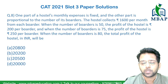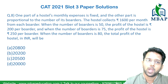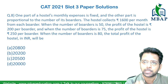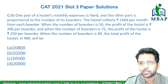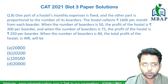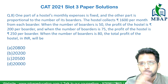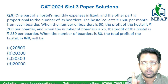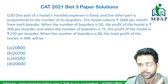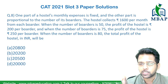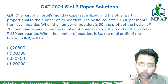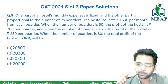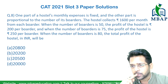Let's have a look at the next question. The question says one part of the hostel's monthly expense is fixed and the other part is proportional to the number of borders. If the hostel collects 1600 per month from each border when the number of borders is 50, the profit per border is 200. When the number of borders is 75, the profit per border is 250. Find the profit when the number of borders is 80.